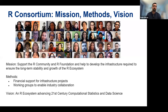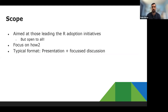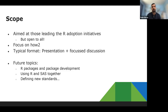The R Adoption Series discusses how we can adopt R in the community, particularly in pharma. The vision is for an R ecosystem advancing 21st century computational statistics and data science. The scope of the series is aimed at those leading R adoption initiatives, open to everyone, and focused on how to help the community adopt R in their day-to-day practice.